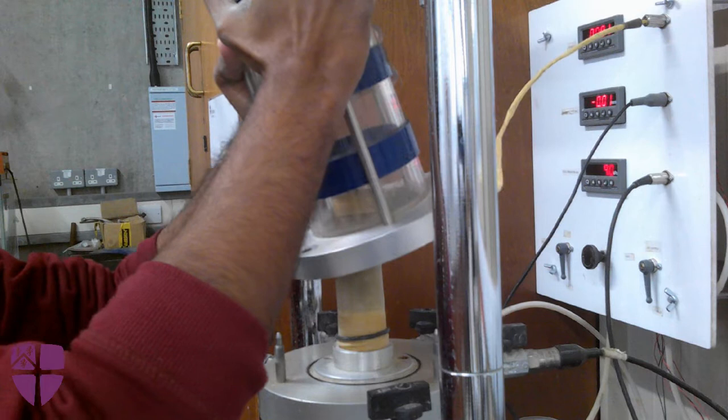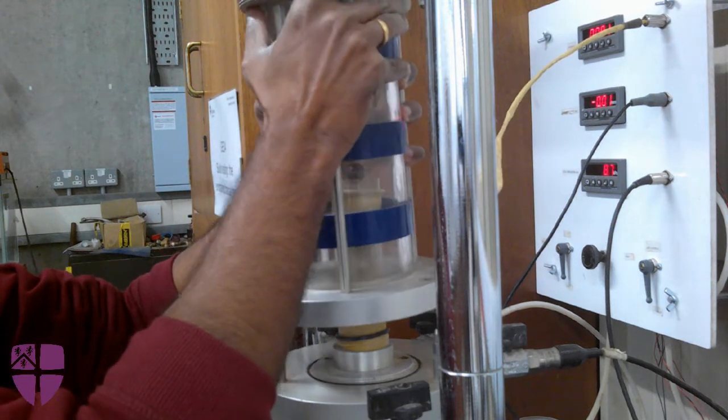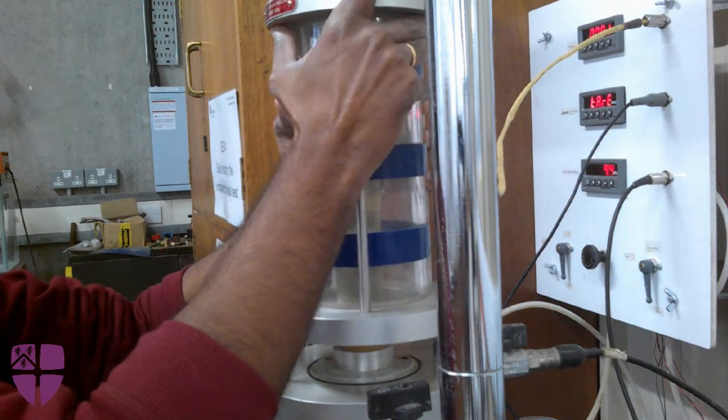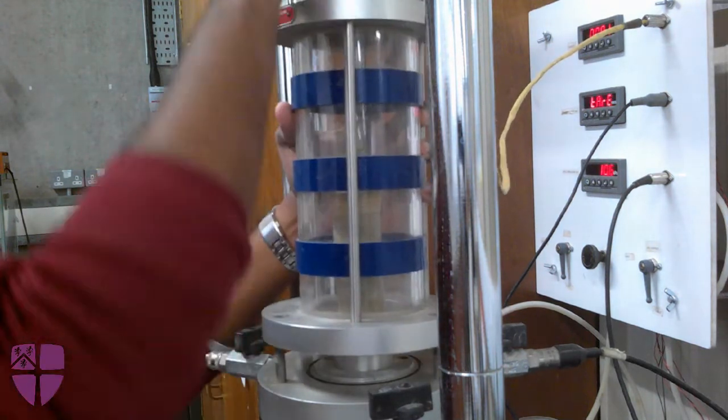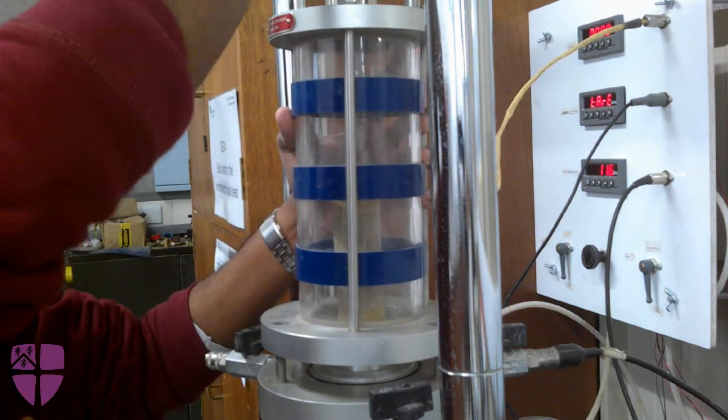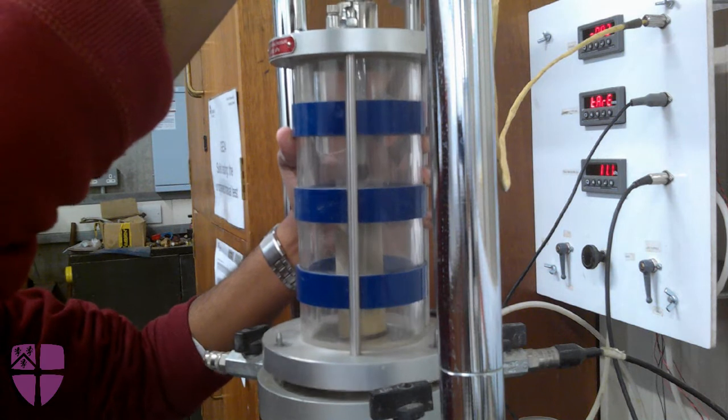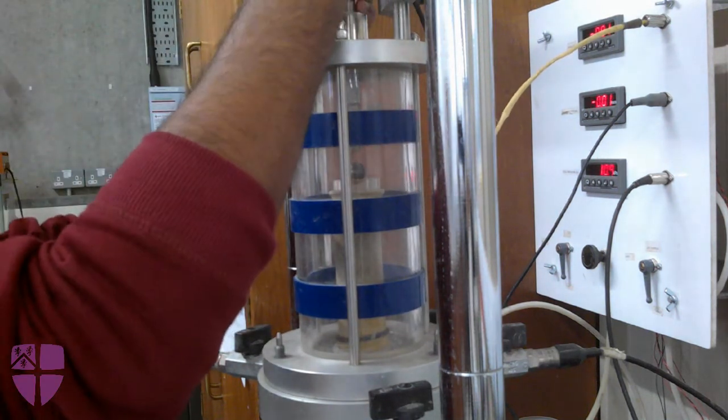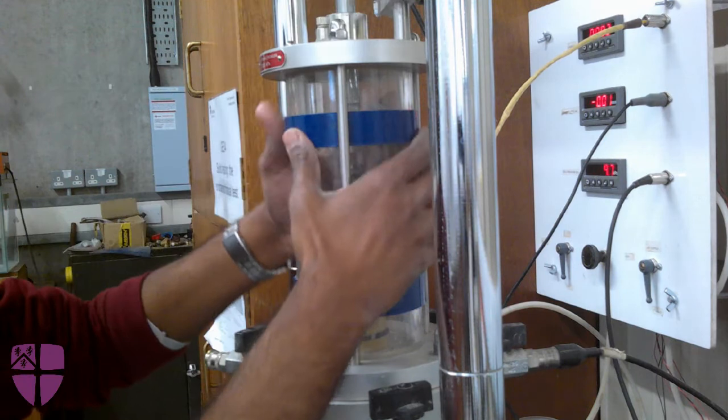Now, carefully place the triaxial cell chamber over the sample on the pedestal without disturbing it, and seal the chamber at the base using the clamps. Using the displacement controls, raise the base of pedestal until contact has been made between the loading ram and the top perspex cap.